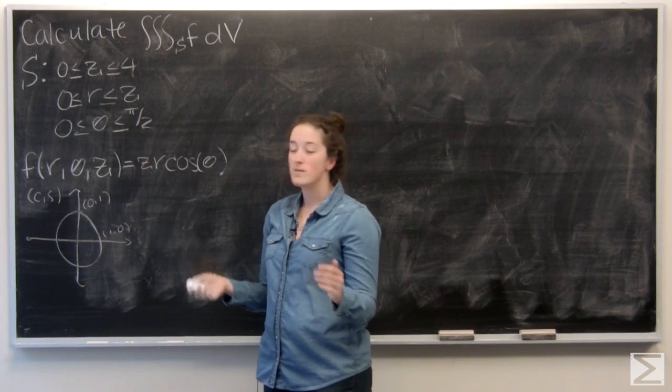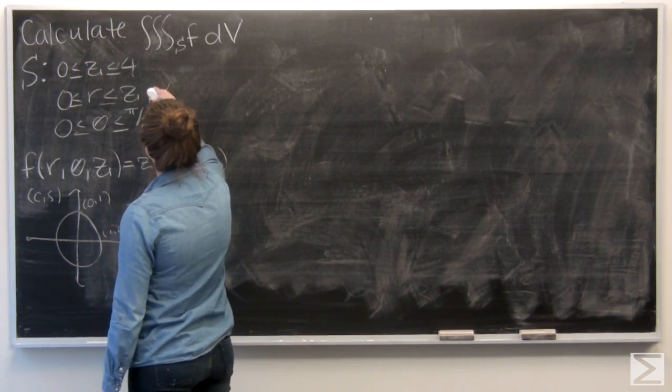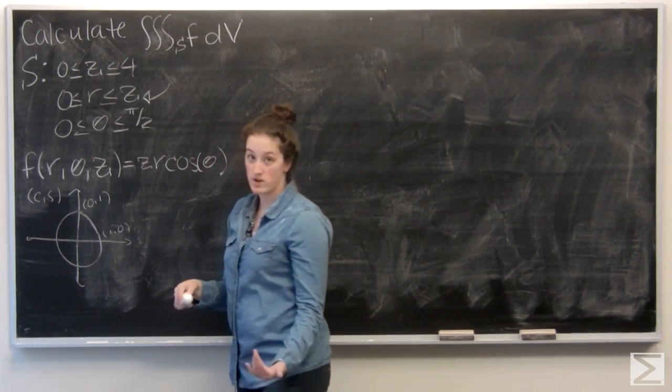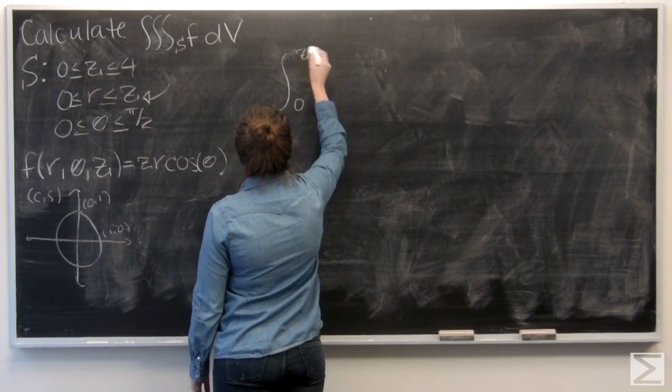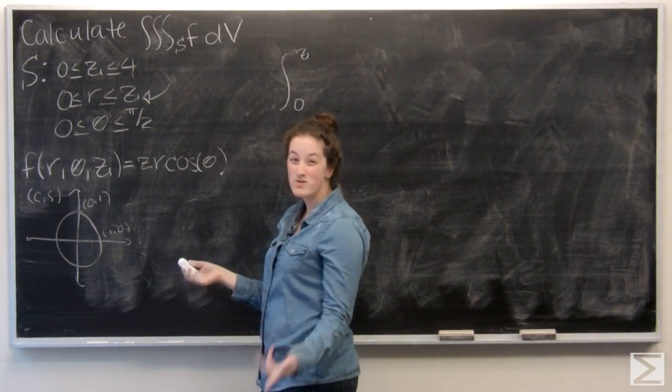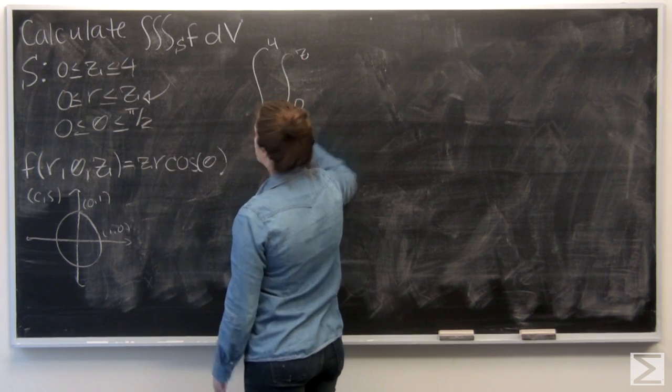The only thing that really matters in the order that we integrate is that we want r to happen first, since it has a function of z in it. And then let's go ahead and do z next, and then theta.